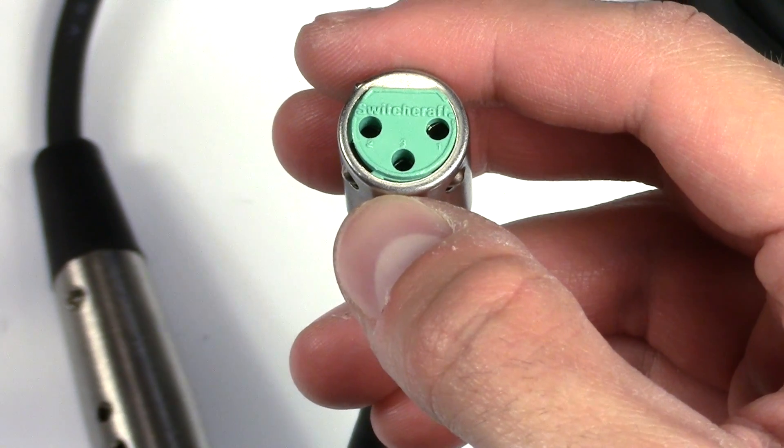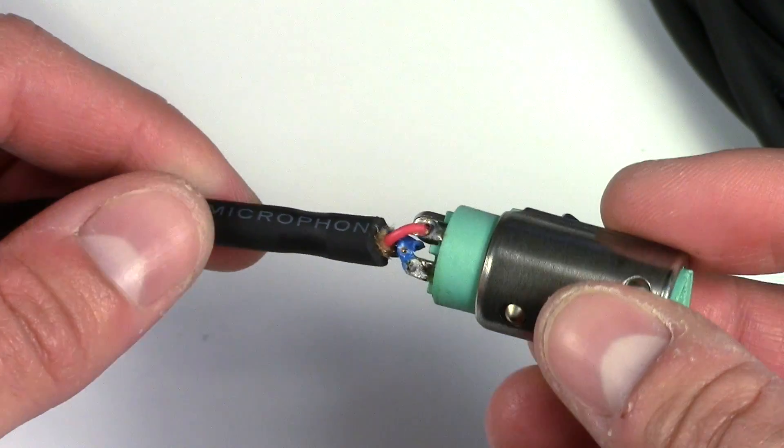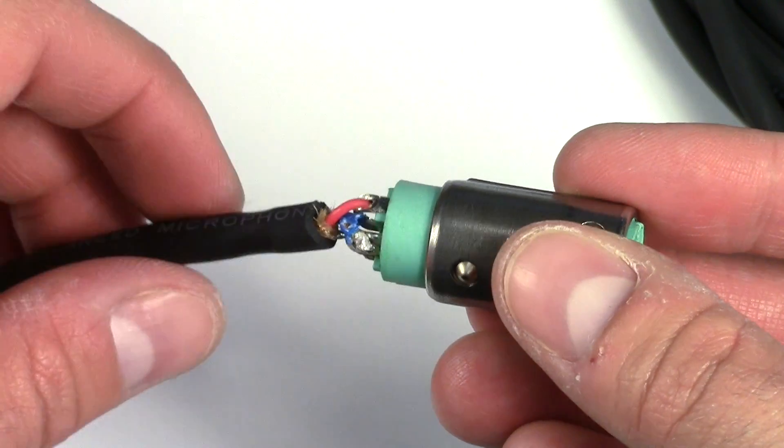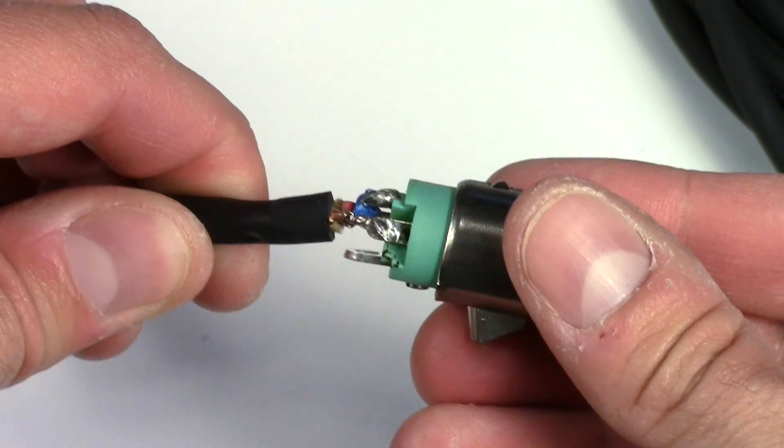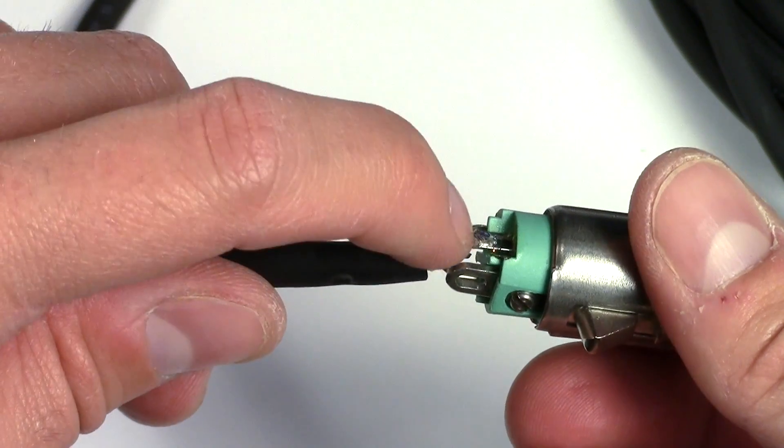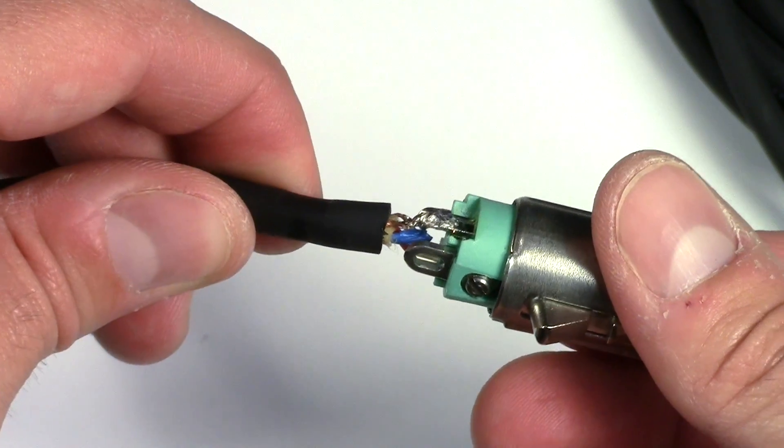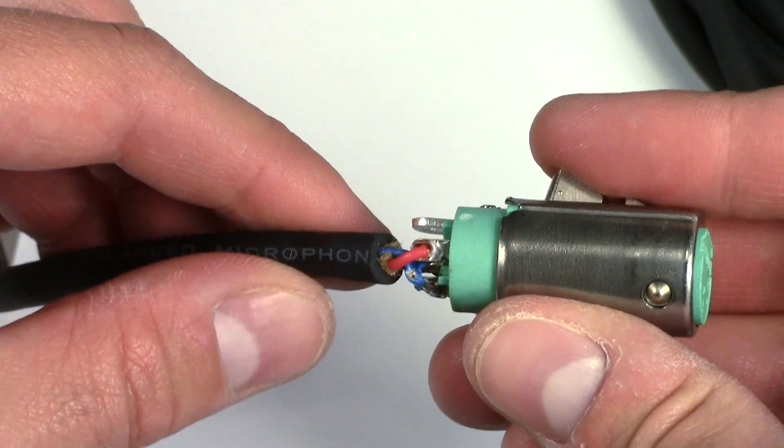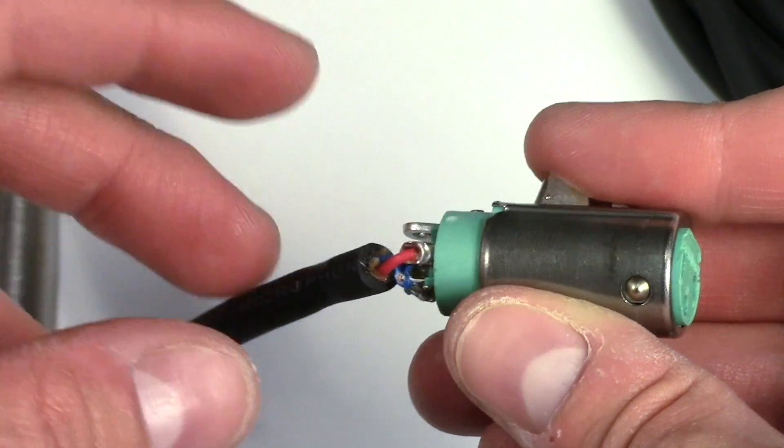And down here on the bottom is pin three. This is a balanced audio connector meaning that one of these wires sends the signal in a positive waveform. The other one sends it as a negative waveform. And then this acts as the ground, this braid. What having the positive and negative waveforms do is that they cancel out any sort of noise.